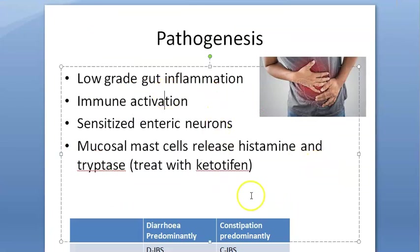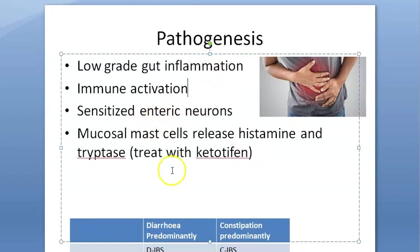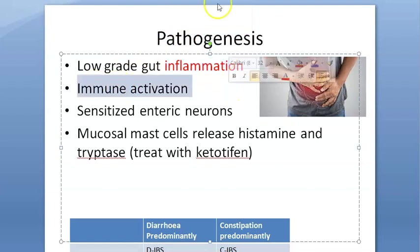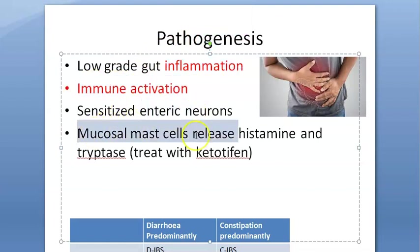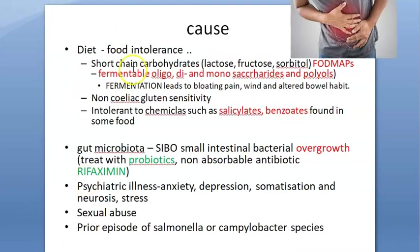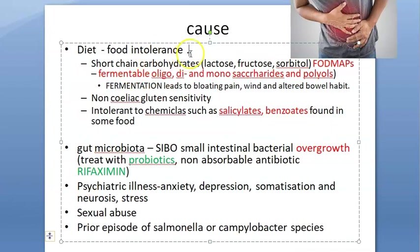Looking at pathogenesis: bacteria can overgrow, leading to low-grade gut inflammation — not high-grade, but low-grade — with immune activation. There are also sensitized neurons. The mucosal mast cells release histamine and tryptase. Importantly, this is food intolerance and not food allergy.